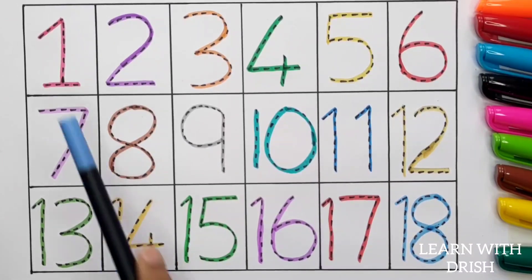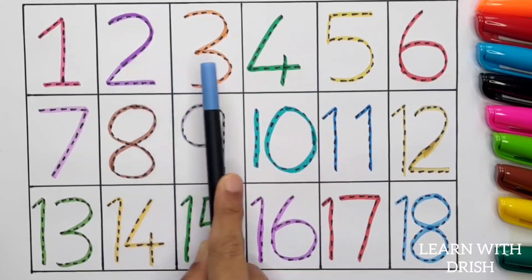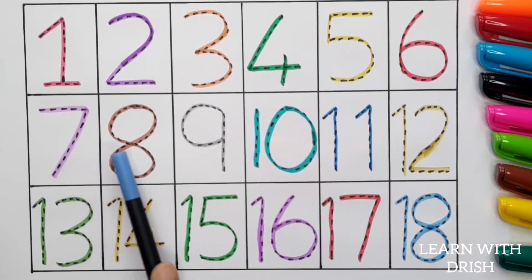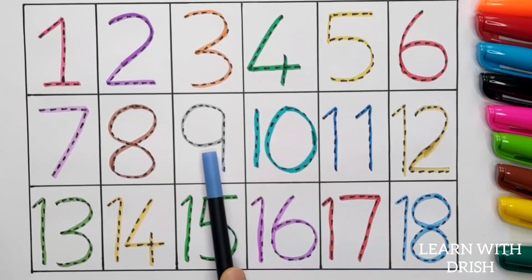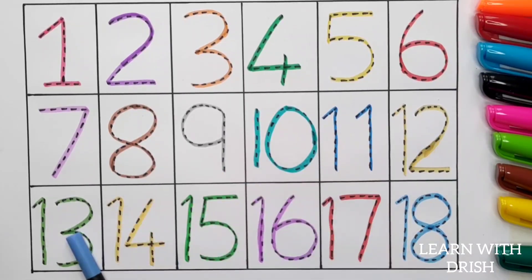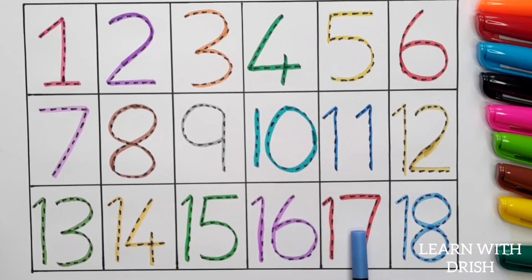1, 2, 3, 4, 5, 6, 7, 8, 9, 10, 11, 12, 13, 14, 15, 16, 17, 18, 19.